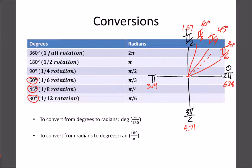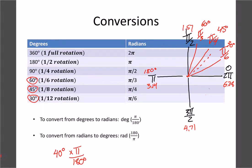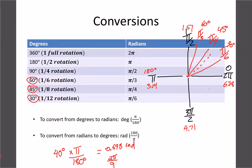To convert degrees to radians, multiply by π and divide by 180, since π equals 180 degrees. For example, 40 degrees times π/180 gives 0.698 radians as a decimal. Alternatively, keep it as a fraction: 40 over 180 reduces to 2/9, so we write it as 2π/9. Both forms are valid — fractions are more accurate, decimals are simpler.